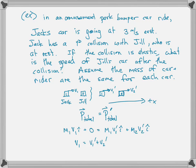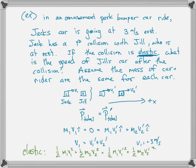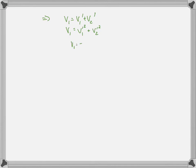We know V₁ is three meters per second, but we don't know V₁ prime and V₂ prime. Because it is an elastic collision, we can also conserve energy. The total kinetic energy before — one-half M₁V₁² plus one-half M₂V₂² — equals the total kinetic energy after, with primes on the velocities. The masses are the same so they cancel, the one-halves cancel, and Jill's initial velocity is zero. We get V₁² = V₁ prime² + V₂ prime². We know V₁ is three meters per second — two equations, two unknowns.